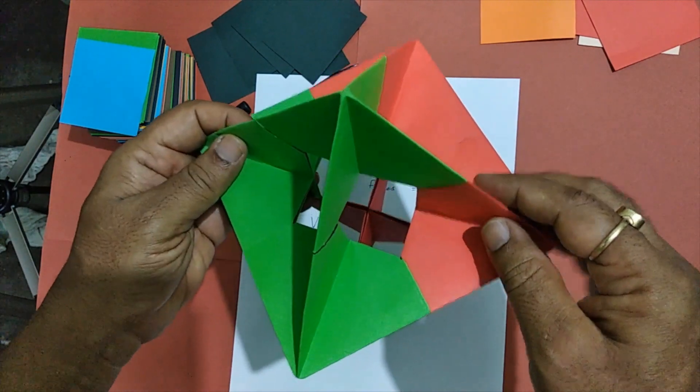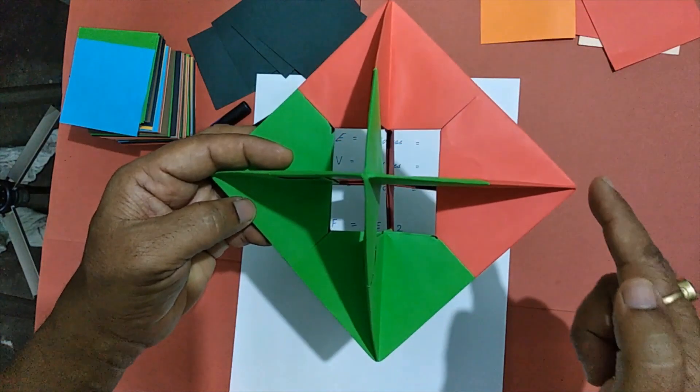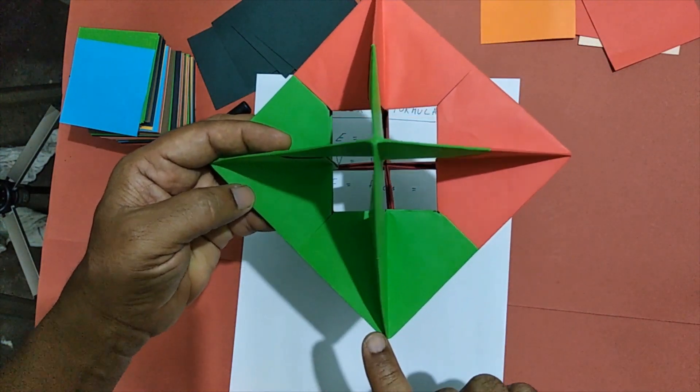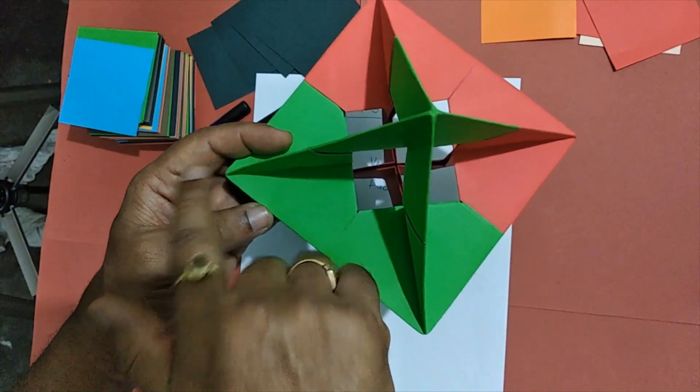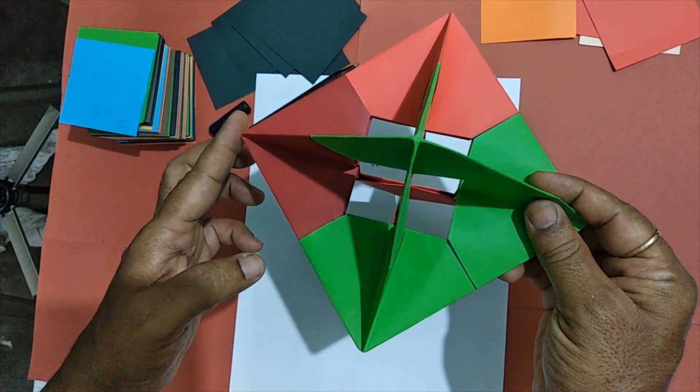Now coming to Euler's formula. Let's count the number of vertices. We have five on this side and one on the other side, totaling to six vertices.